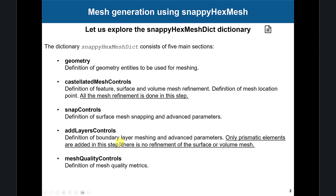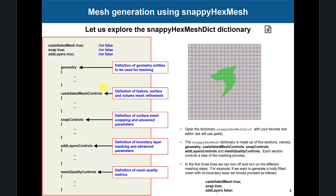During the whole process of castellation, snapping, and layers, snappy always controls mesh quality. I have to say that these steps can be done independently — you can do just the castellation, see if you like it, then restart and from the castellation do the snapping, and then after you have the snapping mesh you can add the boundary layer and iterate until you get the right boundary layer. These steps are independent, which is quite handy.